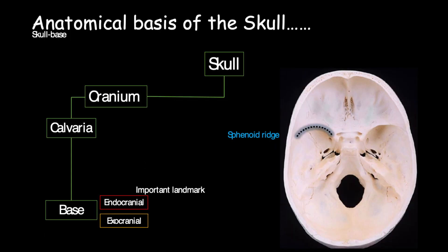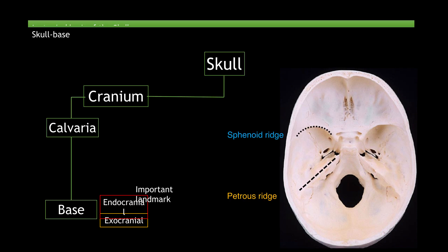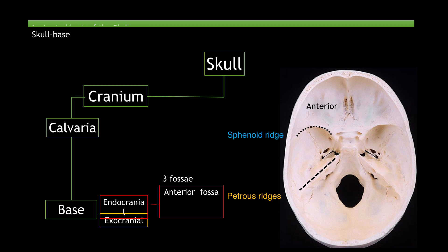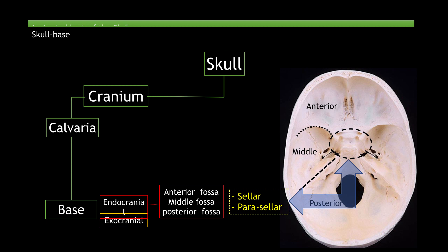Important landmarks to note within the endocranium include the sphenoid ridge and the petrous ridge. There are also three fossae, or depressions, within the base of the skull: the anterior fossa, middle fossa, and posterior fossa. Within the middle fossa, highlighted in the yellow circle, is the sellar and parasellar region.